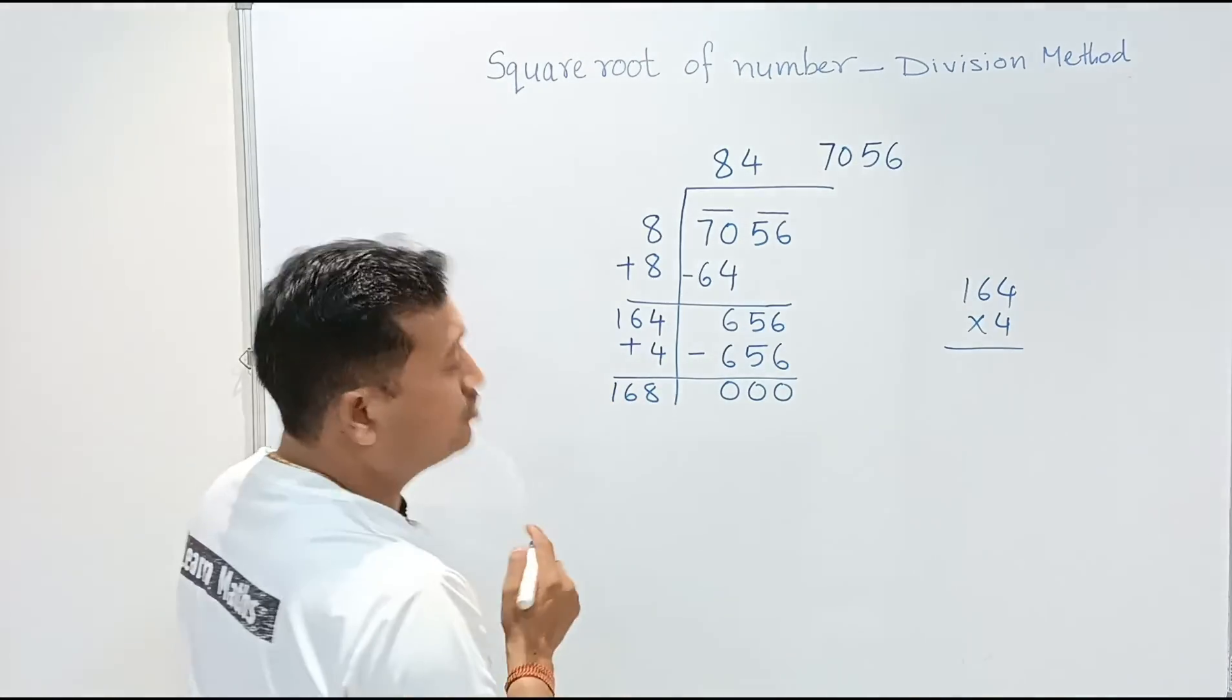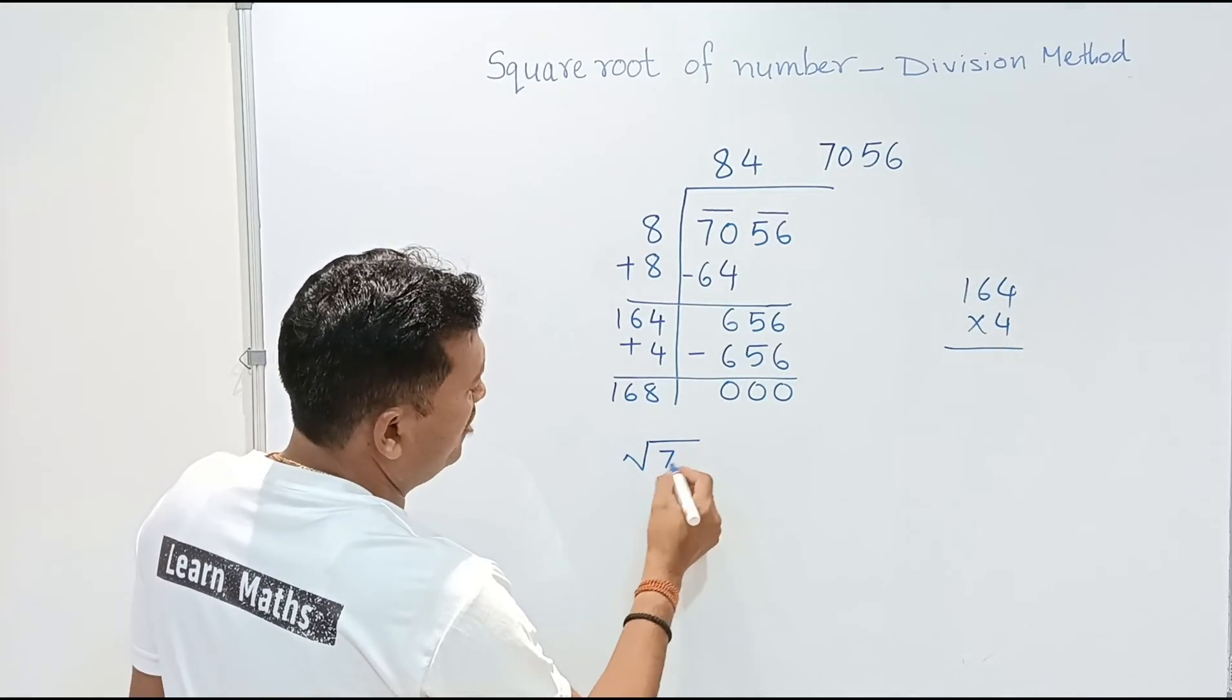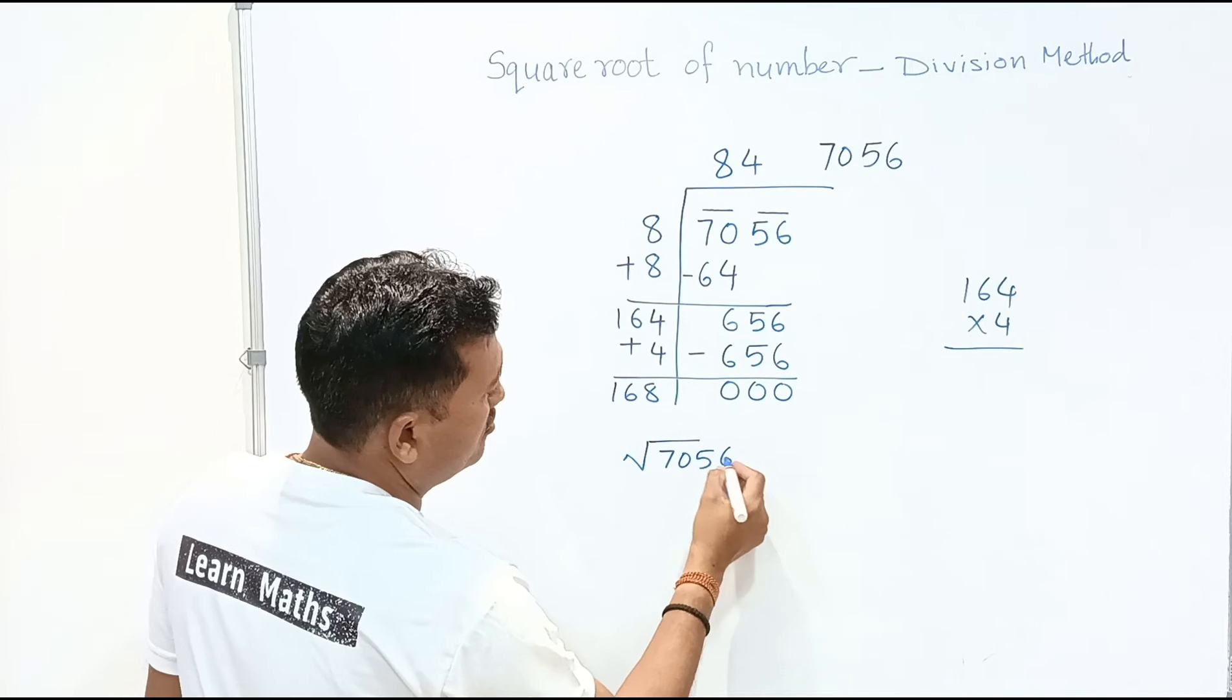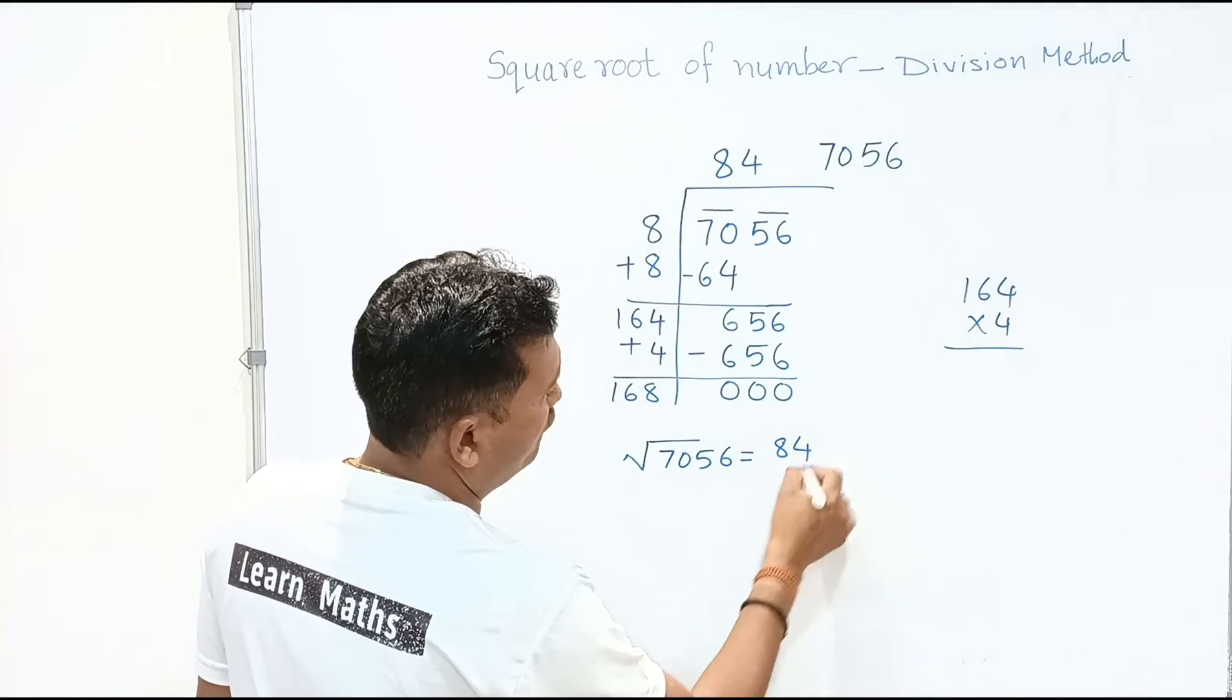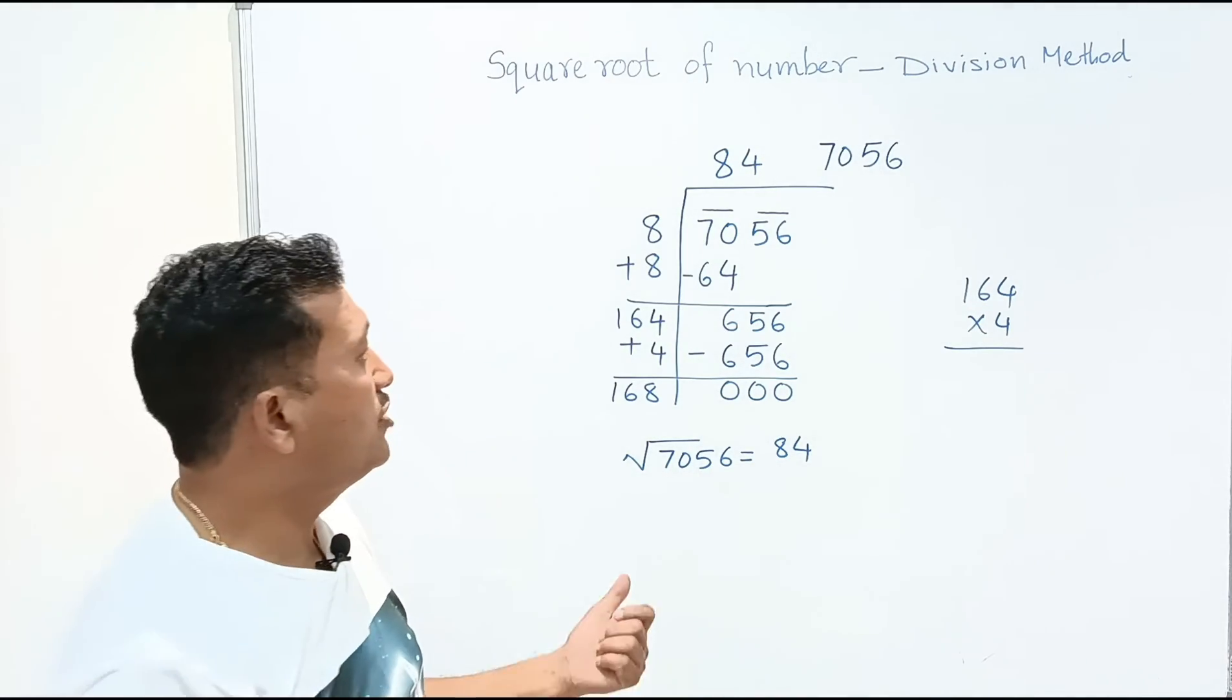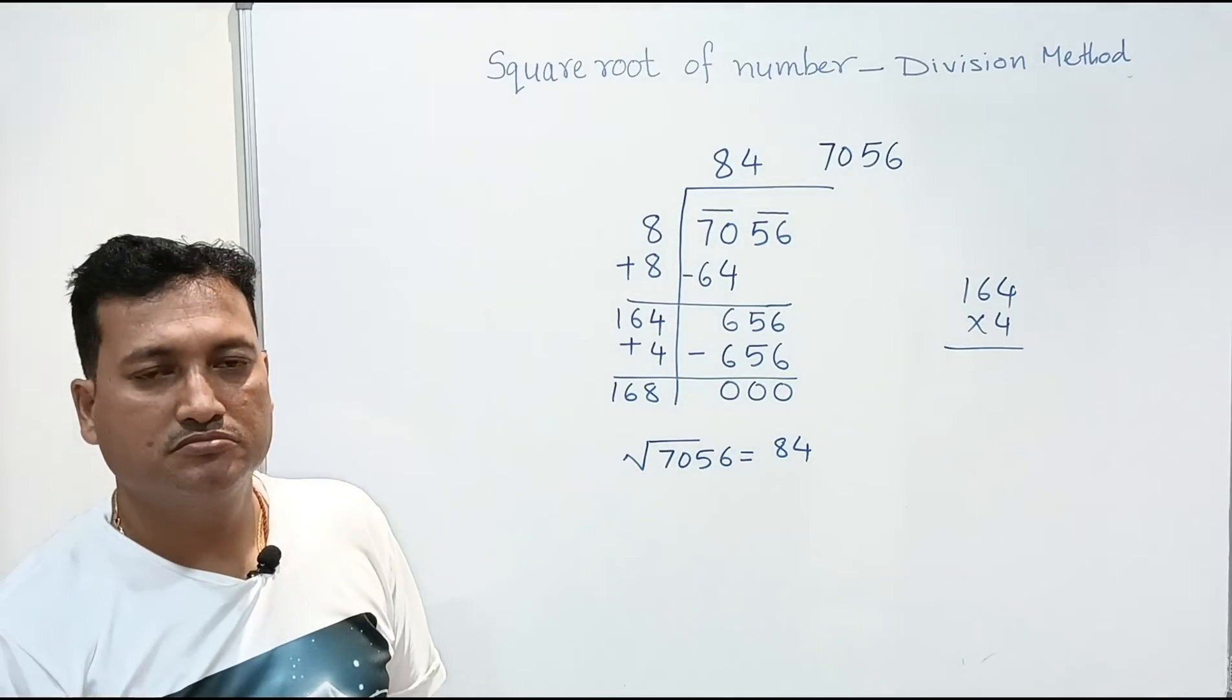So now the remainder is 0. So here square root of 7056 is 84. So this way we can find out square root of any number by division method.